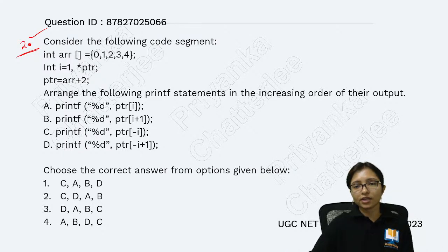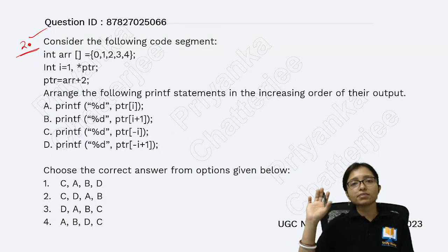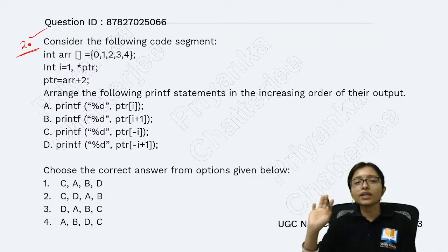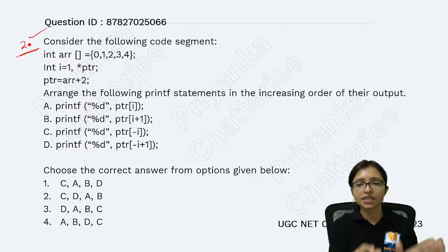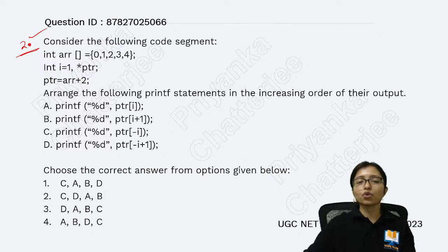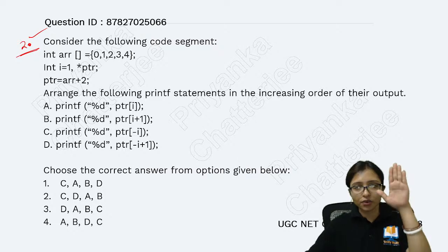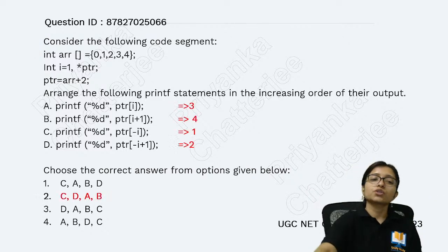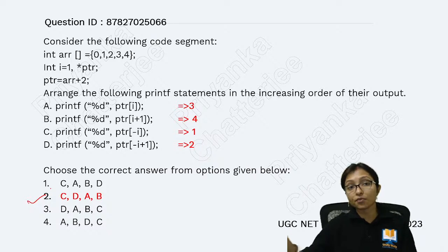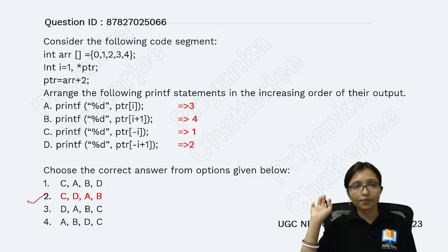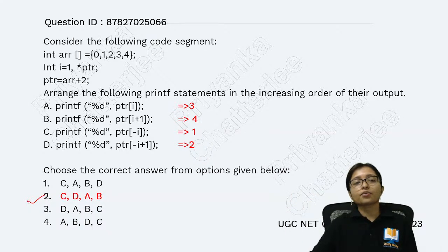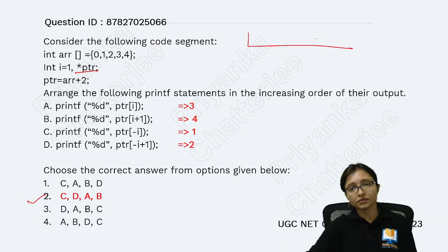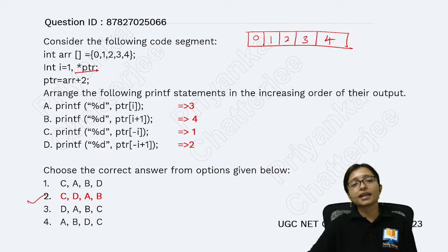Question number 2 — answers are coming. If you need some time, pause the video, check, then play again. I have to go a little faster, but you can pause and think. Your answer for question 2 will be option 2. This is the concept of pointers. When we have ptr, which is a pointer, this pointer is pointing to an array with elements at indices 0, 1, 2, 3, and 4.